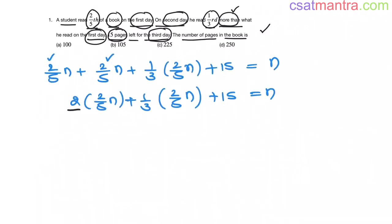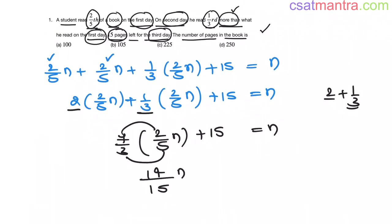Now, 2 plus 1/3 that is 7/3. Okay, see 2 plus 1/3 is 3 into 2, 6. 6 plus 1, 7. Okay, 7/3 of 2/5 n plus 15 this is equal to n. Now, 14/15. 7, 2 is of 14. 3, 5 is of 15. n plus 15 is equal to n.